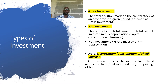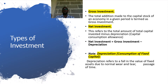Now let's move on to discuss the types of investment. The first type is gross investment. Gross investment is the total addition made to the capital stock of an economy in a given period of time. When an economy purchases additional capital goods to increase its stock of capital, that is referred to as gross investment. The second type is net investment, which refers to the total capital invested minus depreciation.